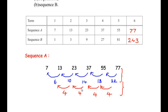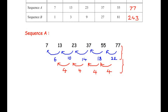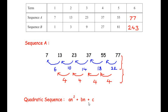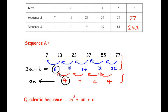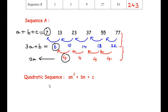Since we got the same common difference after two steps, this is a quadratic sequence. The general form is an² + bn + c. To find a, b, and c: we equate 2a to the constant second difference; we equate 3a + b to the first term of the first differences; and we equate a + b + c to the first term of the sequence.